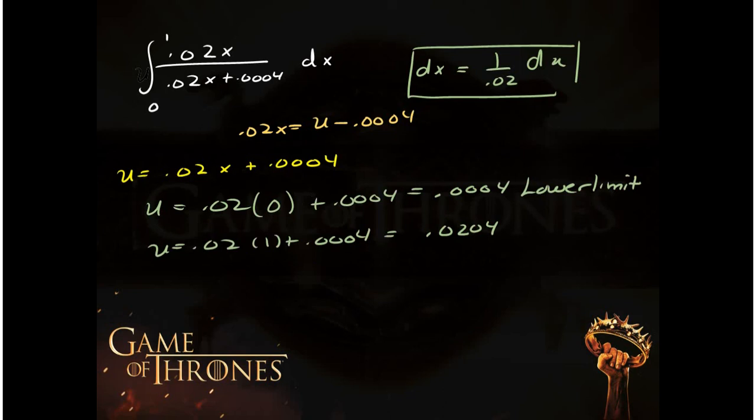This is what I have so far. I have 0.02x is equal to u minus 0.0004. I'm just rewriting. You don't have to rewrite. I just put it on the slide so I can have some continuity. I know that dx is 1 over 0.0004 divided by 0.02 du. I know what u is. And now I need my lower limit and upper limit just like I did before. Lower limit and upper limit are found by plugging in the 0 and the 1 into the transformation. And now I'm ready to do my substitution.